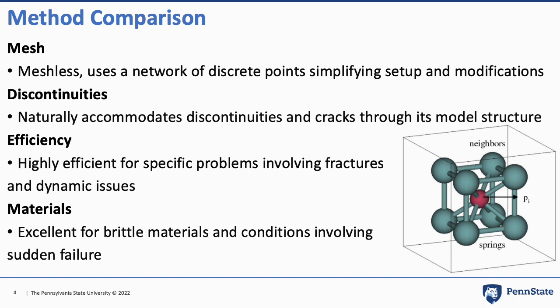Moving on to efficiency, FEM is versatile but can be computationally demanding depending on mesh quality. For DEM, the same principle applies but only to the particle count increasing. For BEM, it is efficient for specific problems but limited in scope due to boundary-only modeling. FEM is applicable to almost all material types but requires complex material models. DEM is ideal for granular or blocky materials, and BEM is best suited for elastic materials in large domains like geotechnical applications.